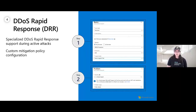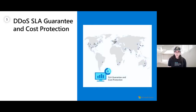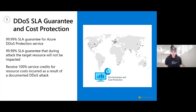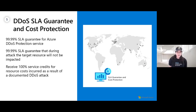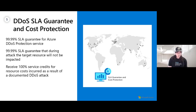DDoS protection standard customers have access to the rapid response team during an active attack. Rapid response can help with attack investigation during and after an attack. To engage, simply create a new severity A support request with problem type 'as under attack,' generating a request to a dedicated queue. The service comes with a four-nines SLA guarantee for DDoS protection uptime and a four-nines SLA guarantee that the target resource will not be impacted during an attack. Cost protection provides resource credits for resources that may have dynamically scaled, such as VM scale sets, Application Gateway V2, or Azure Firewall, with 100% service credit if resources scaled during a documented DDoS attack.